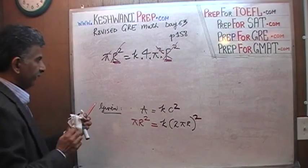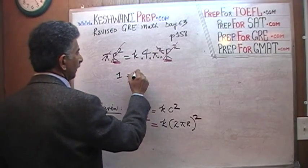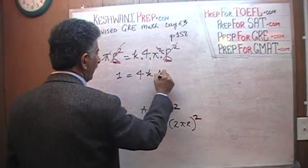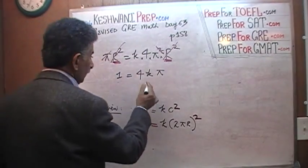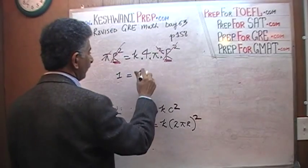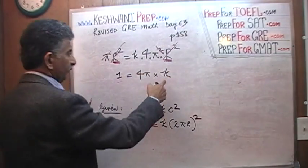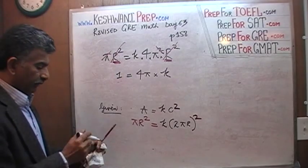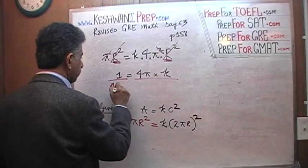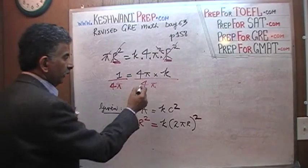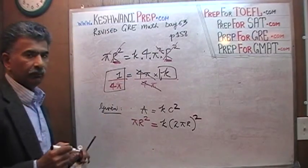So we are left with: 1 equals 4 times k times pi. What is the question asking? The value of k. So we divide both sides by 4 pi. That will get rid of this 4 pi, and voilà — k equals 1 over 4 pi. That's it, we are done.